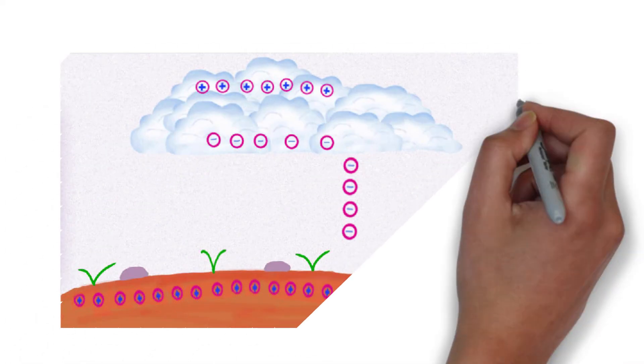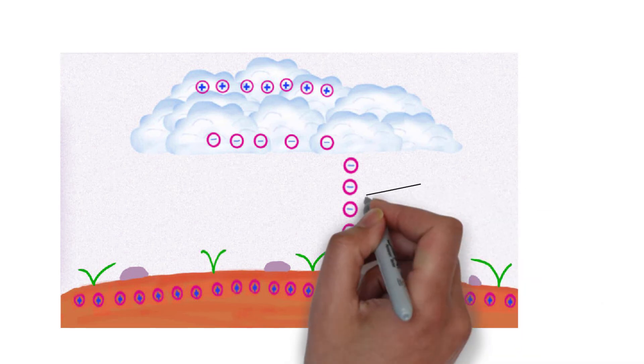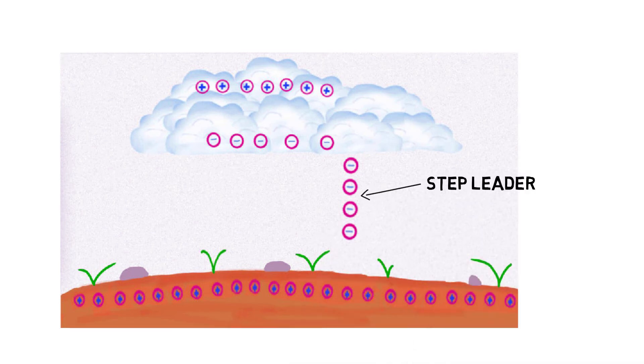A negatively charged particle starts to discharge from the cloud to the ground, called a step leader. When the negative charged particle from the cloud and the positive charged particle from the ground meet, it creates lightning.